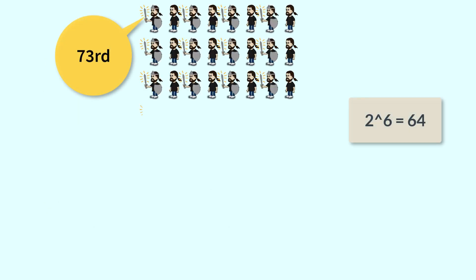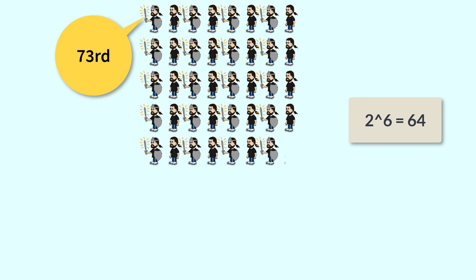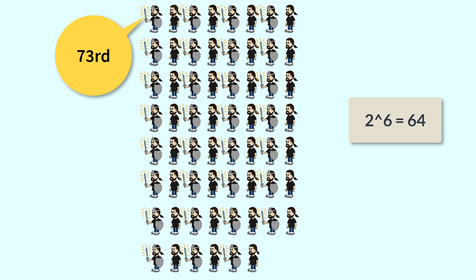When the number reduces to 64, as per the prior example, number 1 always survives. But here we have already reached number 72, so the immediate next number is 73. Person 73 becomes the new number 1 when the remaining people stand in a circle of 64, which is a power of 2. Hence, in this case, the 73rd person will survive.